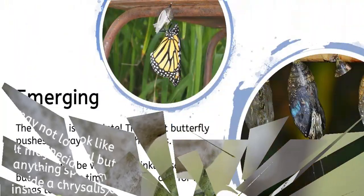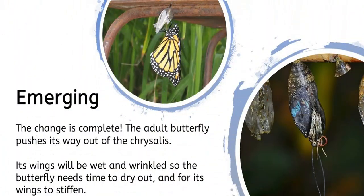So inside the chrysalis it starts as liquid and mush, but then a beautiful butterfly emerges. After some time the butterfly comes out of the chrysalis. Its wings are wet and a bit wrinkled, so the butterfly needs to dry out and let its wings stiffen before it's ready to fly away.